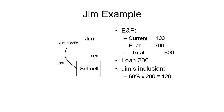Schnell had E&P of 800 euros as of the end of the year. Thus, Jim has an inclusion under Section 956 of 120 euros — his share of the 200 euros investment in U.S. property. Jim must translate that amount to U.S. dollars as if it were a dividend on December 31st. However, the inclusion is not subject to the reduced rate of tax on dividends.